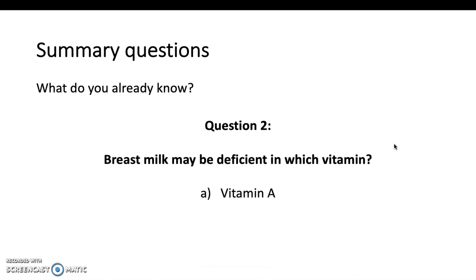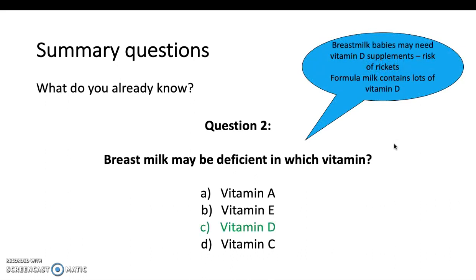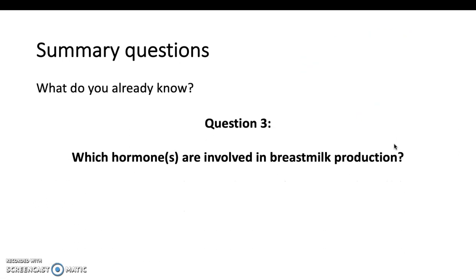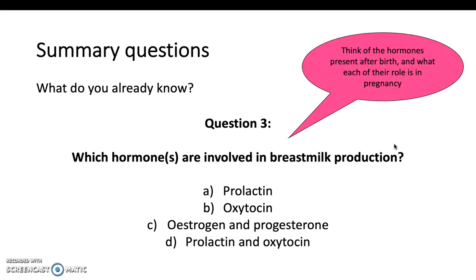Question 2: breast milk may be deficient in which vitamin? It's vitamin D. Breast milk is beneficial in so many ways, but the baby may need supplements, and formula milk does contain supplements already. Finally, which hormones are involved in production of breast milk? Prolactin produces the milk. Oxytocin ejects the milk, and also reduces the risk of postpartum depression and postpartum haemorrhage.